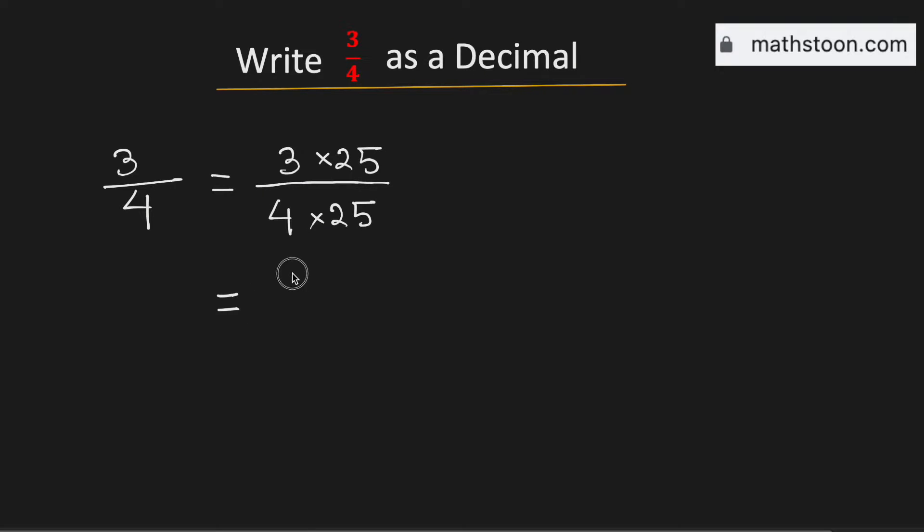Now simplifying, we will get 75/100. As we are dividing by 100, there will be two digits after the decimal place. Therefore, it will be equal to 0.75.